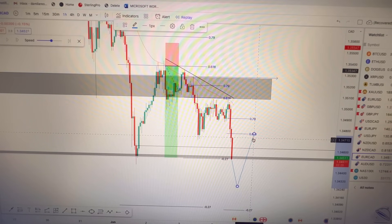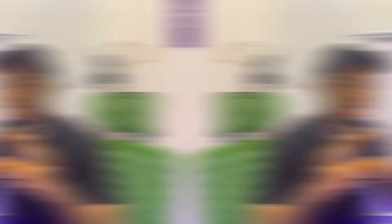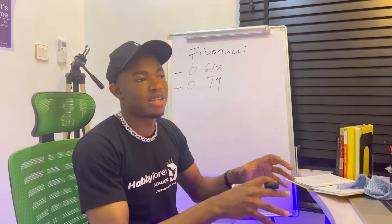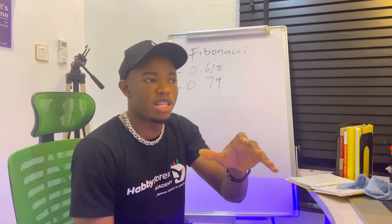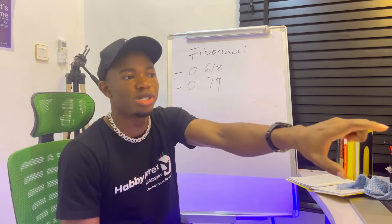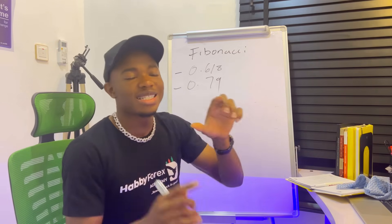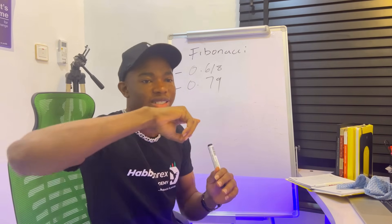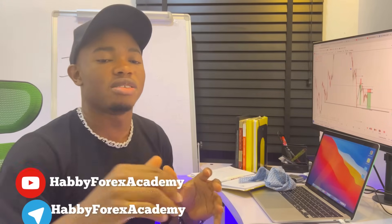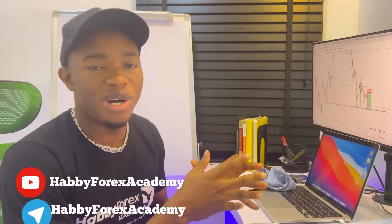That is how you apply Fibonacci on your charts. Make sure you apply it in the trending market, not a range market. The extension — the -0.27 — is your take profit opportunity. When the market reaches the -0.27 we can have a reversal there. Sniper gang, if you enjoyed this video and learned one or two things, subscribe to this YouTube channel right now. You can also join the Telegram platform where I share free signals. Let's trade together, let's make money together. Sniper gang — let's go.